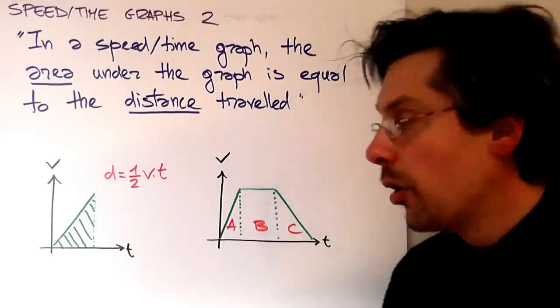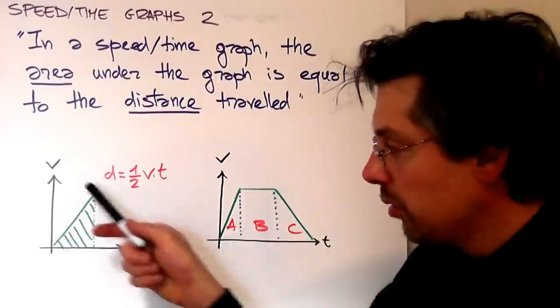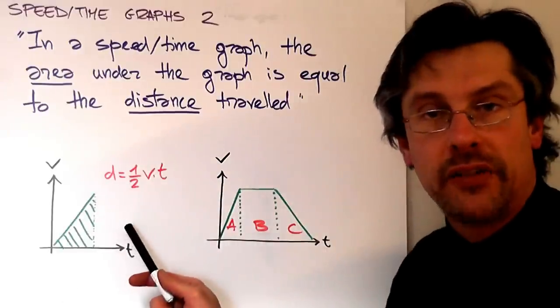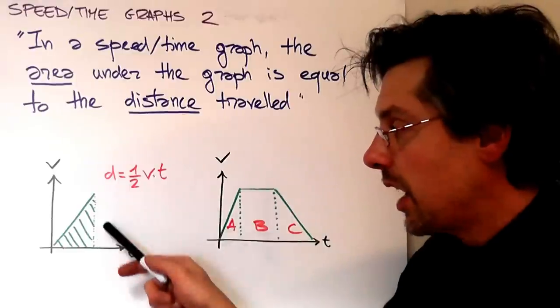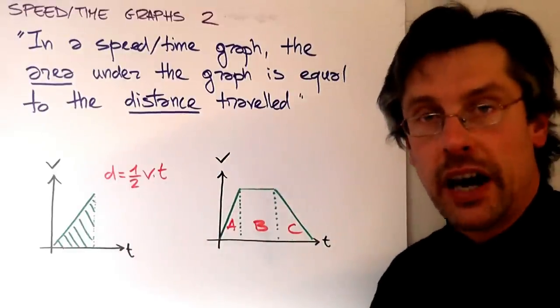We saw the case of a rectangle. In the case of a triangle, like this, we can find the distance doing base, that is time, times height, that is the speed, divided by 2.